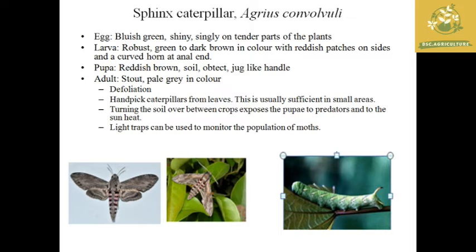The larvae have a curved horn at their anal end, known as the anal horn. The pupa is a reddish-brown obtect pupa with a jug-like handle on its upper surface. The adult is a stout, pale green moth. Management includes hand-picking and collection from the leaves and destroying them. Light traps can be used to monitor the population of moths in the field. Turning the soil between crops exposes the pupa to predators and sun heat.